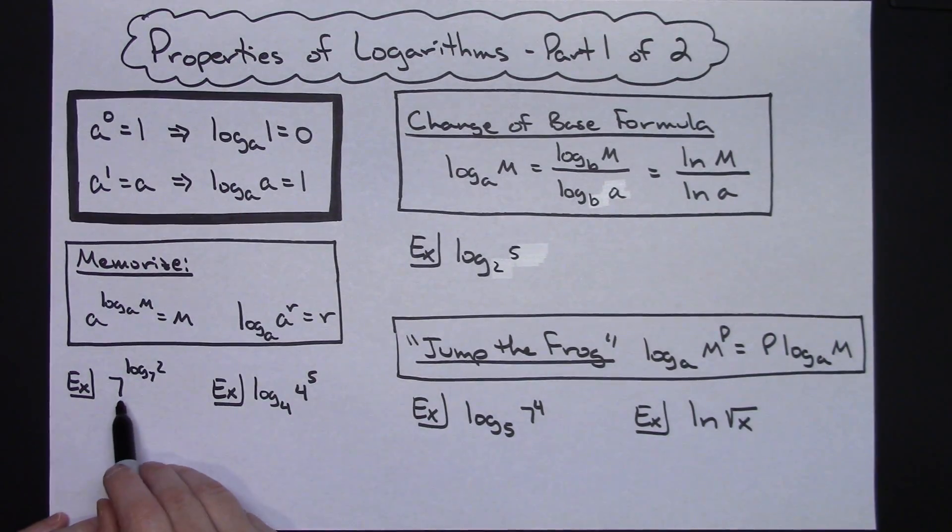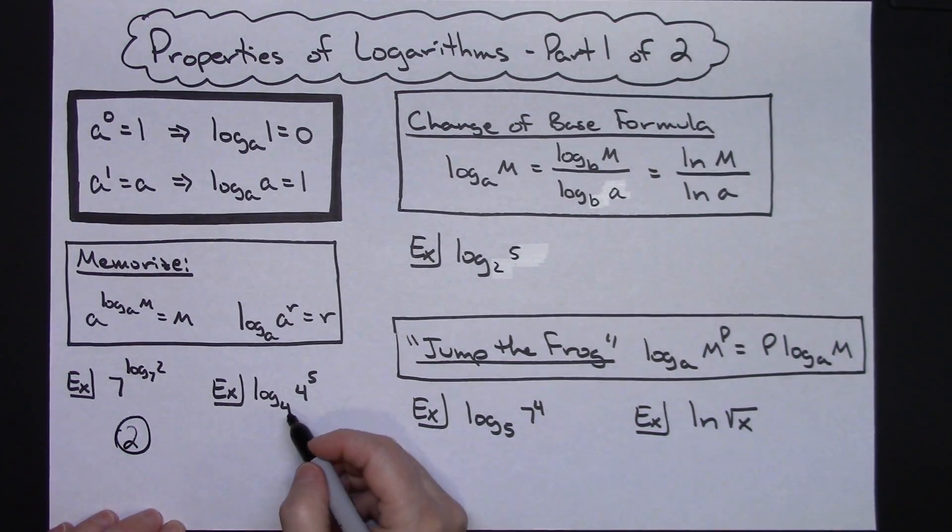So I've got a couple of examples of these right here. Let's say I had seven raised to the log of two base seven. Well, I can make note here. My base on the log is seven. The base of this exponent is seven. So since both of those are seven, I can evaluate this real quickly as two.